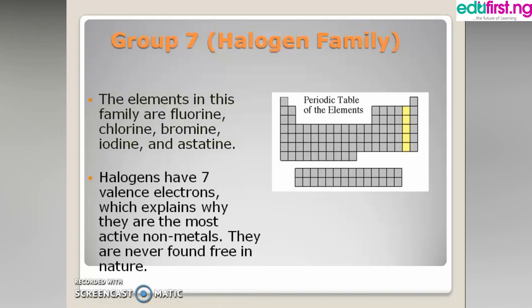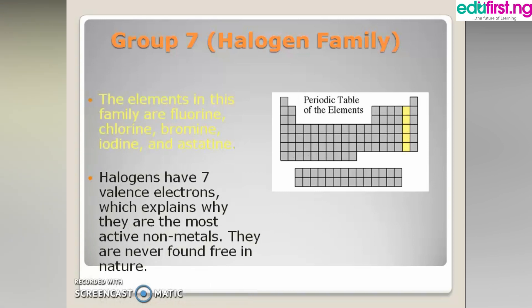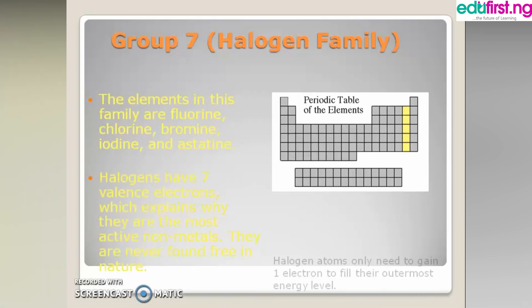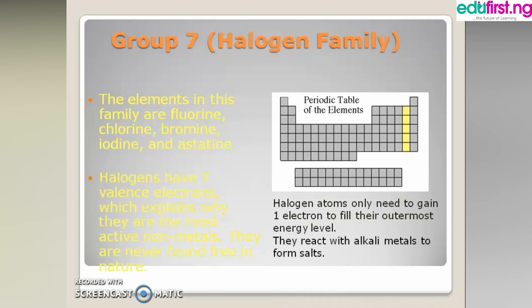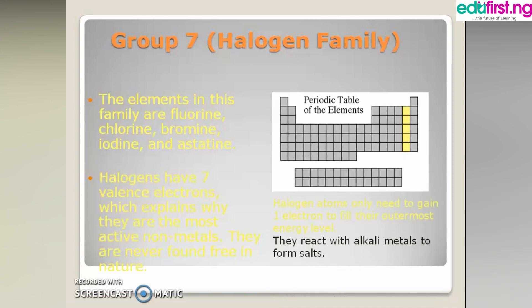Group 7 elements are the halogen family. Elements in this group include fluorine, chlorine, bromine, iodine, and astatine. They have 7 valence electrons and are the most active non-metals, though they are never found free in nature.